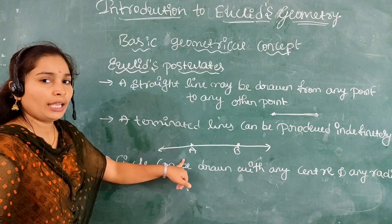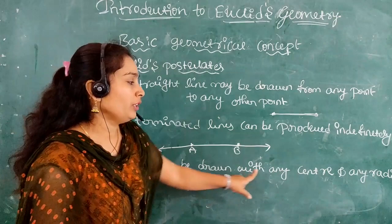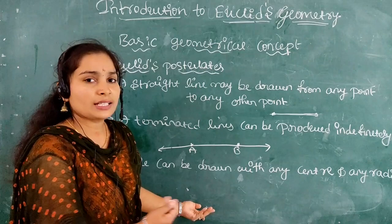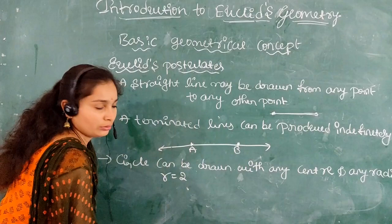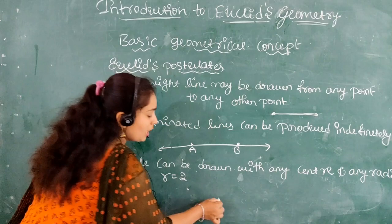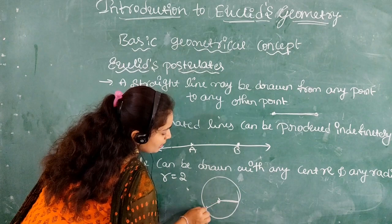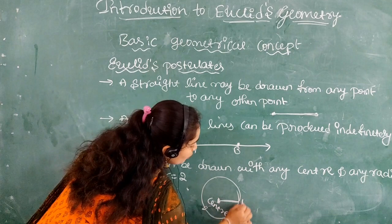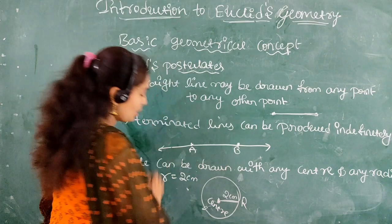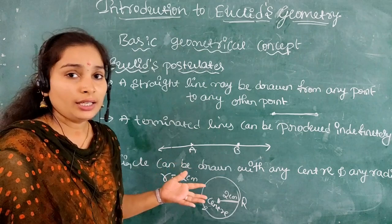The third postulate: a circle can be drawn with any center and any radius. For example, take radius R equal to 2 cm. You can take a center anywhere, and from center O to point R is 2 cm. When you draw a circle, you can take any center and any radius.